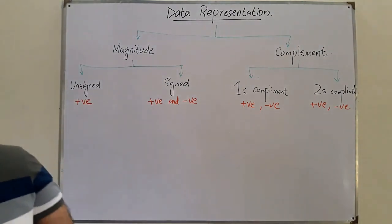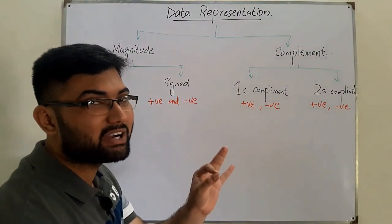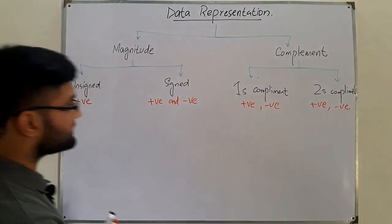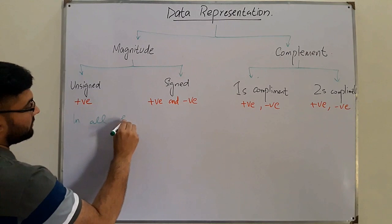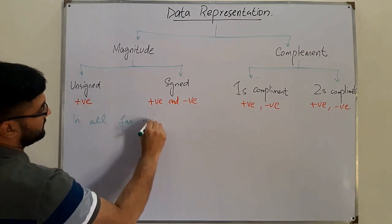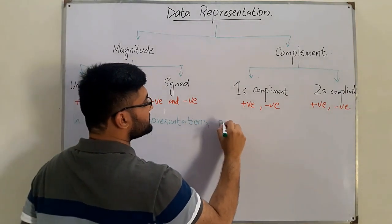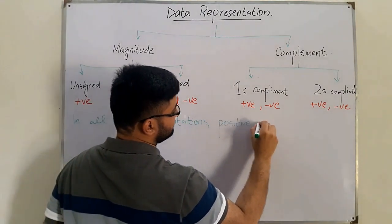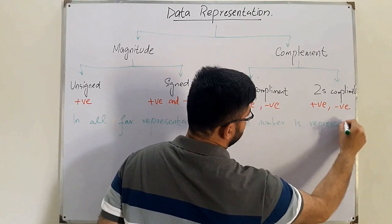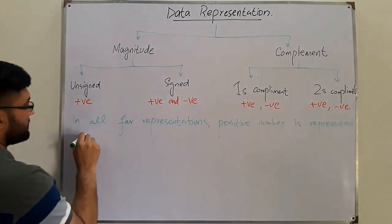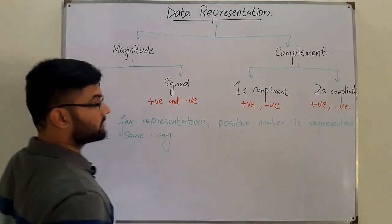Now an important point: in all four representations, a positive number is represented in the same way. This is an important point to remember. We already know how to represent positive numbers in binary.